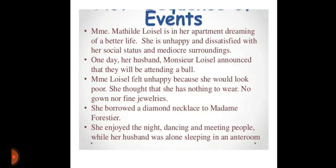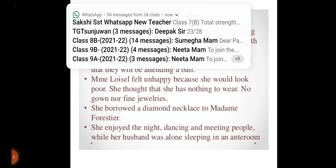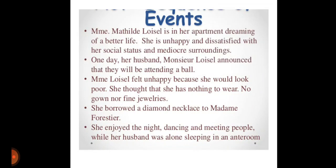The main character of the story is Madame Mathilde Loisel. She is a kind of lady who is never happy with whatever she has. She is in her apartment dreaming of a better life, unhappy and dissatisfied with her social status and mediocre surroundings. One day her husband, Mr. Loisel, announced that they will be attending a ball party. But Madame Loisel felt very unhappy because she thought she had nothing to wear — no gown, nor fine jewellery. So she borrowed a diamond necklace from Madame Forestrier and enjoyed the night dancing and meeting people, while her husband was alone sleeping in an anteroom.